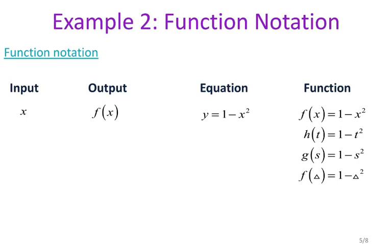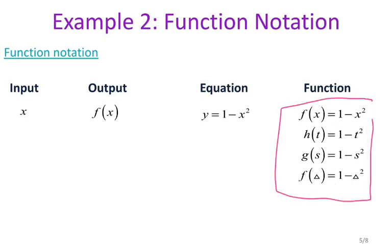For each one of these it's stating the same type of function. I have f of x equals one minus x squared — what that means is I am taking one minus whatever my input is and squaring it. Whatever is in the parenthesis is your input: it can be an x, a t, an s, or even a triangle. Think of your function as a sort of machine — you take your input, it goes through the function machine which represents the operations, and then you get a corresponding output. Every one of these functions does the same operation: one minus your input squared.